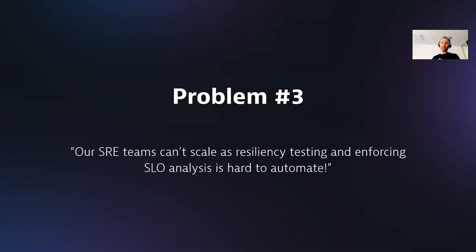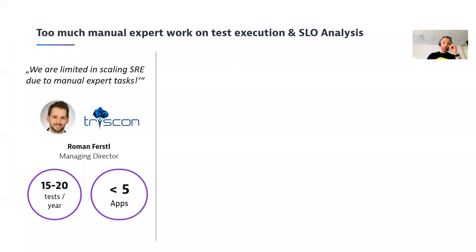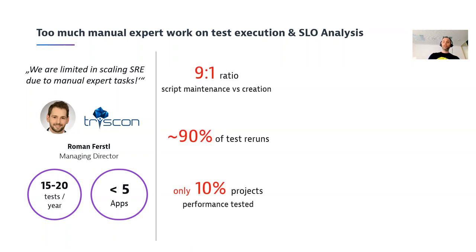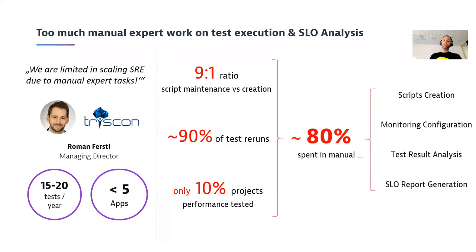Another problem we want to solve: a lot of SRE teams are trying to get SRE practices around SLIs, SLOs, performance testing, and chaos engineering at scale into their organization, but it's really hard to automate at scale. Roman Fiestle, Managing Director at Triscon, has been working with organizations that are limited to the number of tests they can run per year or the number of apps they can validate. A lot of this is done manually, tests have to be re-run because they're only run 15 times a year, and only about 10 percent of projects are onboarded — they haven't scaled across the organization.